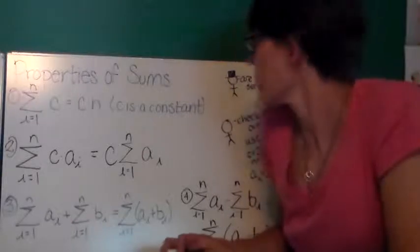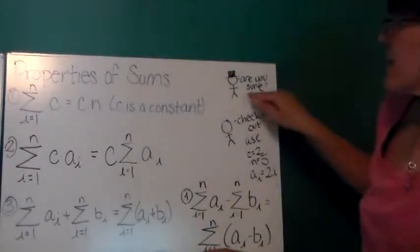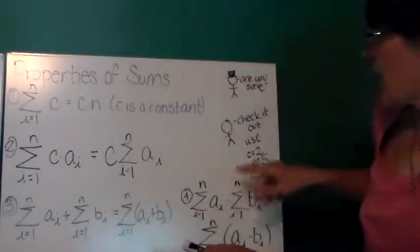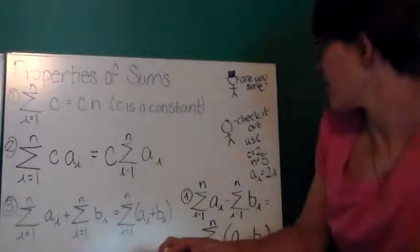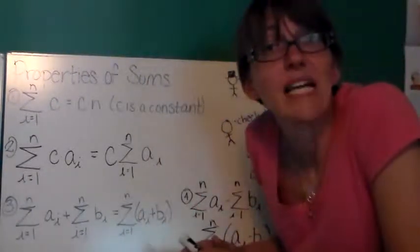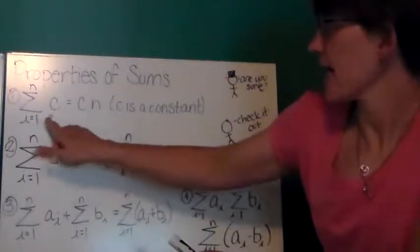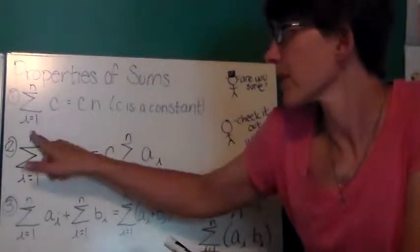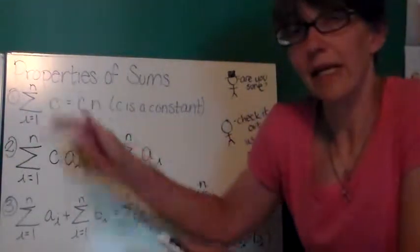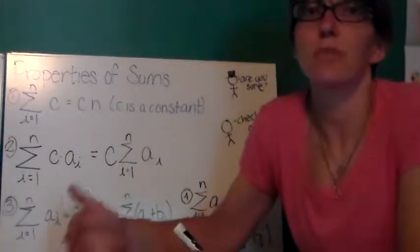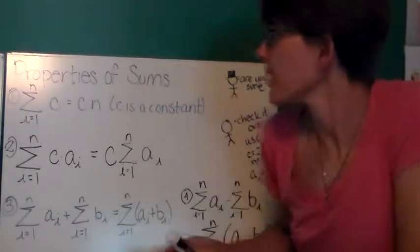Now here are some properties of sums. You're going to want to write this down and you're going to want to check to be sure these work. I've suggested that you use 2 for c, 5 for n, and 2i for your a sub i function. For b sub i you could use 3i, 5i, whatever you want. So here's some properties. The first property is that if this is just a constant term, then if I add that constant term n times, I'm going to get c times n. Because I'll just be adding that same constant term n number of times.